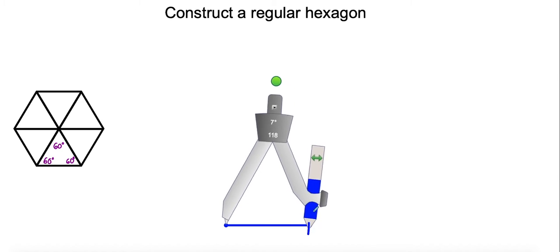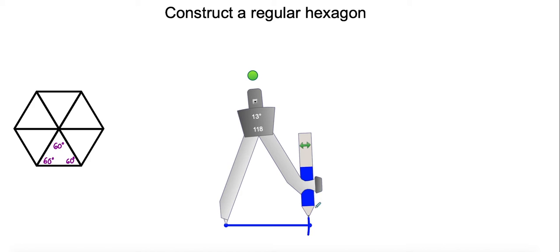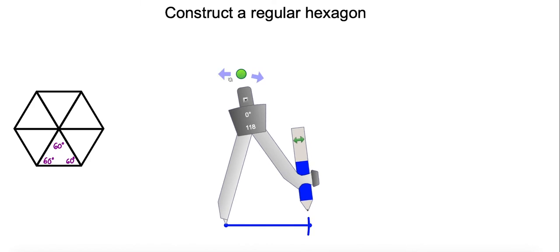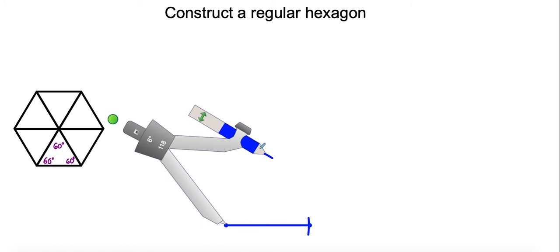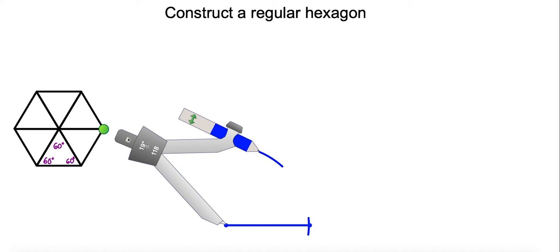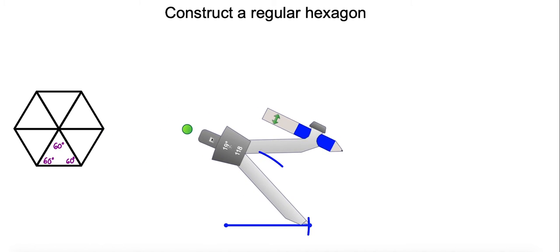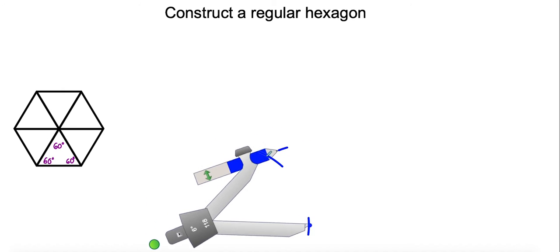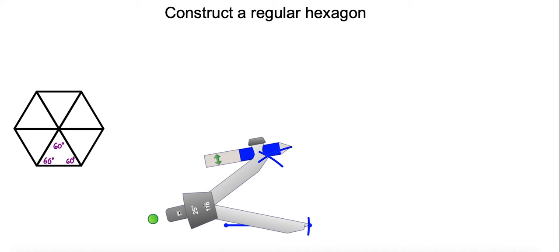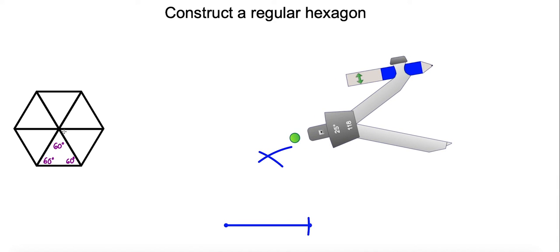We start off by constructing an equilateral triangle. We measure the length of the segment, swing an arc here, and then go to where the third vertex of the equilateral triangle would be and swing an arc in that direction. Now we move it to the second endpoint and swing an arc. This intersection point corresponds to the center of the hexagon.